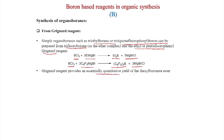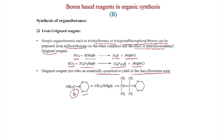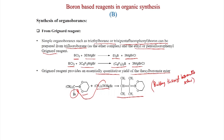A Grignard reagent provides an essentially quantitative yield of the thexyl boron reagent. Using an alpha-bromo boron reagent with just one equivalent gives a substitution reaction, and you get a bulky thexyl boron reagent designated A*. The thexyl boron reagent is useful in migration reactions because it will not migrate — it acts as an anchor group.